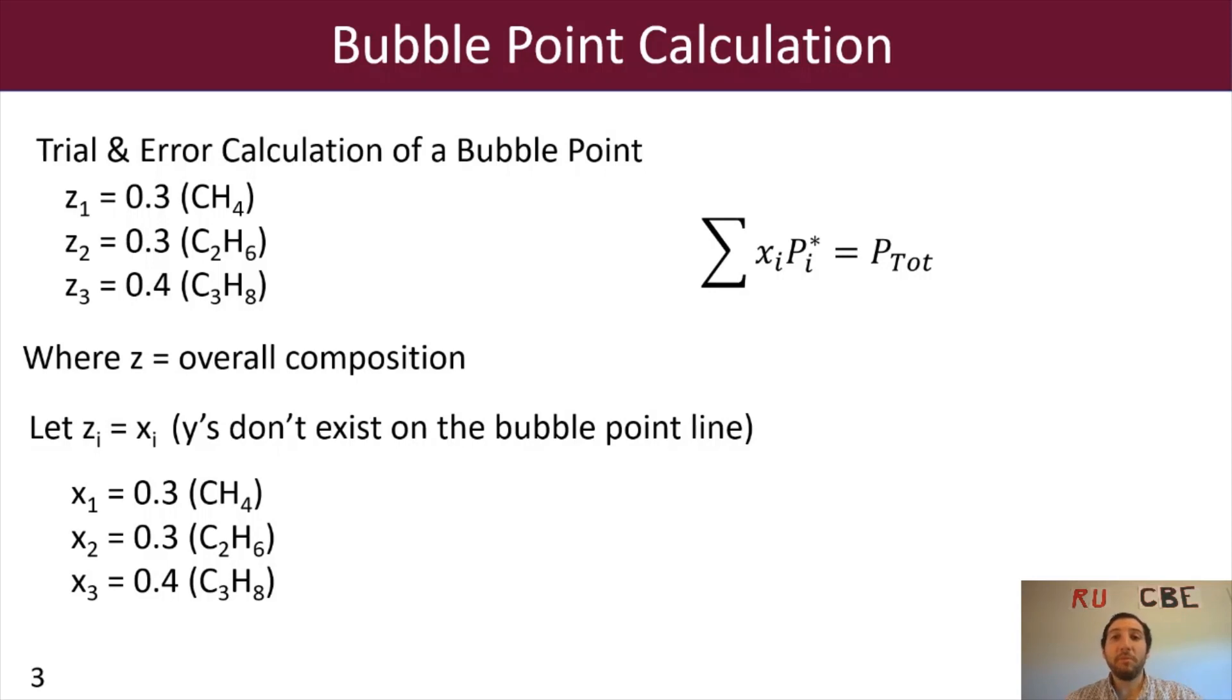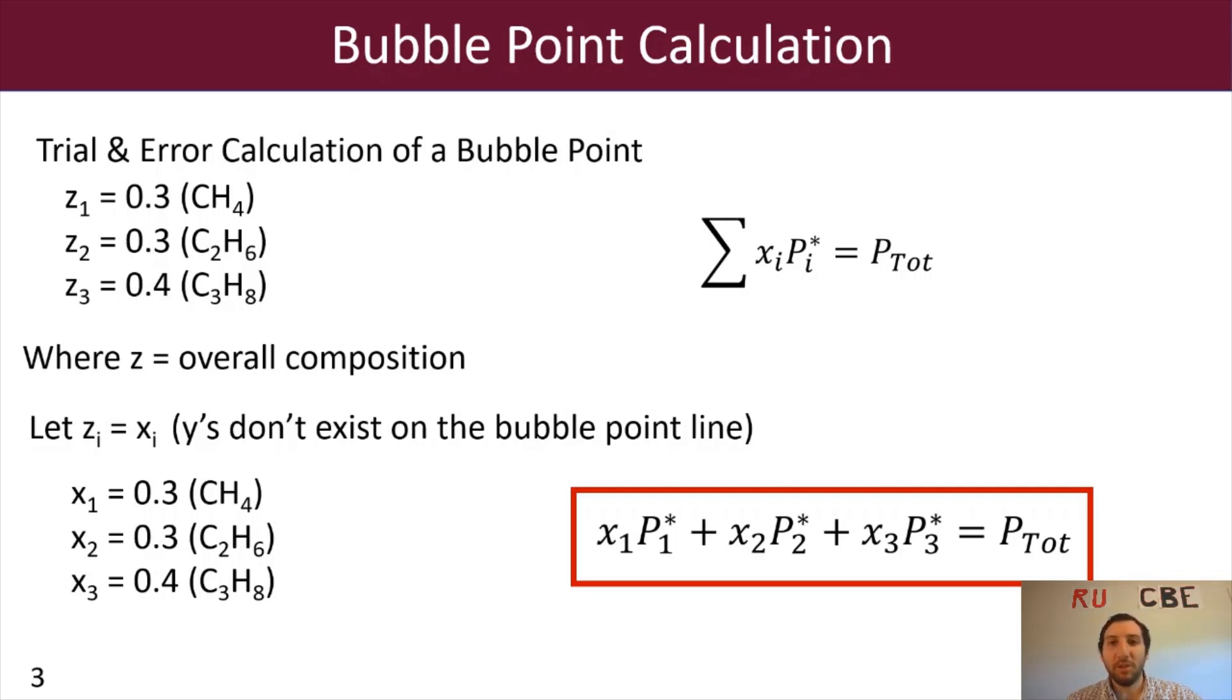So for this problem, since I have a ternary system, I can then say that the sum, x_1 P_1 star plus x_2 P_2 star plus x_3 P_3 star, is going to equal P total. All right, so we can now use this equation, and we're going to be able to use the Antoine coefficients for P_1, P_2, and P_3 in order to solve for our bubble point temperature.